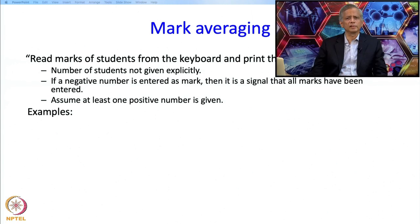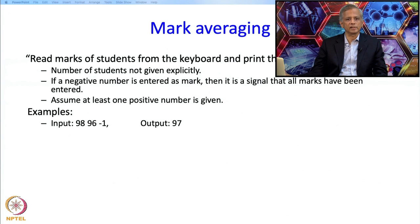Let me first construct some test cases or examples of input-output. For example, the input might be 98, 96, -1. This indicates that 98 and 96 are student marks and -1 signals that no more input will be given. In that case there are two marks, 98 and 96, so their average is 97.